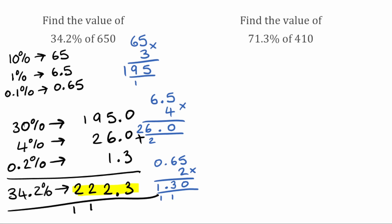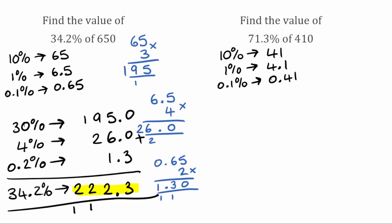For this next example, we've got 71.3% of 410. Just like before, we're going to find our 10% first. So we take 410, divide it by 10, that gives us 41. We then find our 1% by dividing by 10 again — 41 divided by 10 gives us 4.1. And then we find our 0.1% by dividing by 10 again — 4.1 divided by 10 gives us 0.41.